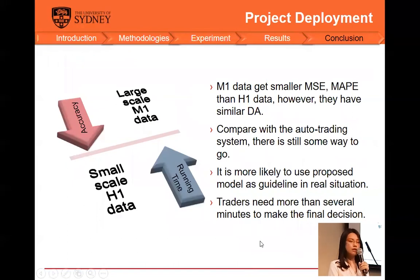In the conclusion part, I want to start by talking about the trading time intervals. H1 data is collected every hour. M1 data is collected every minute. For the same time period, say four years in this case, the amount of M1 data is over 40 times that of H1 type. With large-scale data, the MSE and MAPE for M1 data are no doubt smaller. However, given the experimental results, the directional accuracy of the two datasets are almost the same. In real scenario, the 77% directional accuracy cannot guarantee a profitable trading.